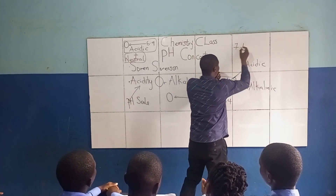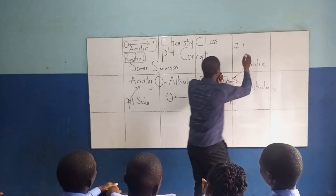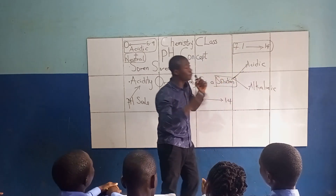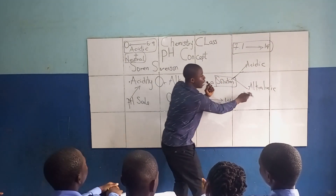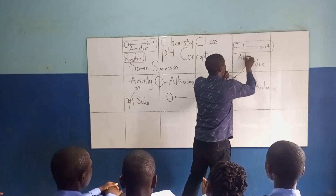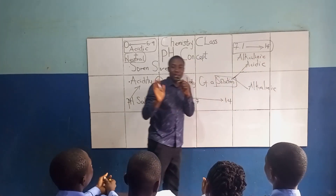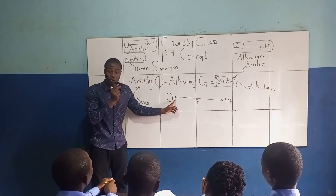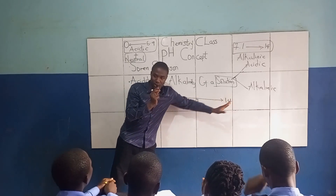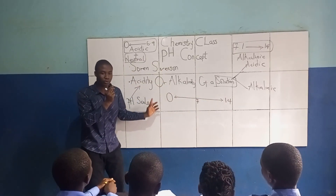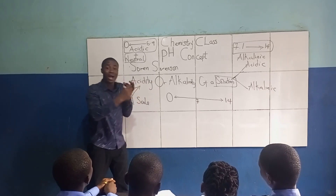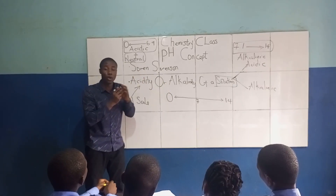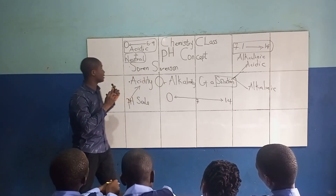When we have a value on the pH scale ranging from 7.1 to 14, we say that solution is alkaline. As the arrow moves towards zero, the solution becomes more acidic.